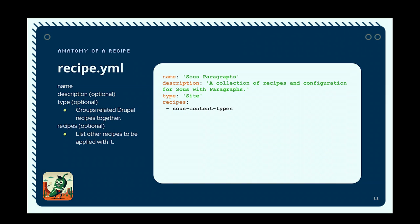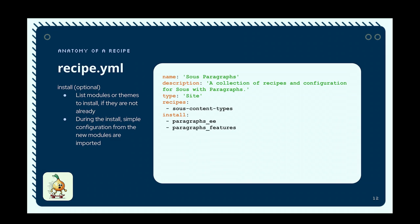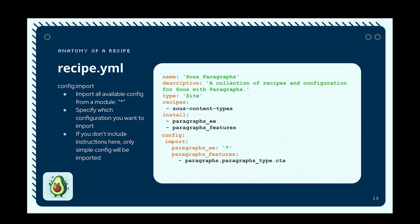The recipe.yaml file is similar to a project info.yaml file for a module or theme — name, description, type. But now you have a 'recipes' key where you can specify other recipes to apply as part of getting your recipe applied. You can specify modules or themes to install, and for those, whether any of their configuration should be imported. You can use a wildcard to ingest everything, or specifically call out particular ones you want imported as part of your recipe.